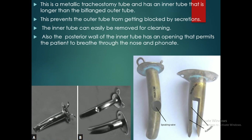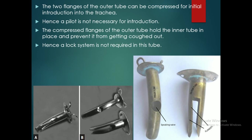It is a metallic tracheostomy tube and has an inner tube that is longer than the bi-flanged abductor tube. This prevents the abductor tube from getting blocked by secretions. The inner tube can easily be removed for cleaning. The posterior wall of the inner tube has an opening that permits the patient to breathe through the nose and enables phonation. The two flanks of the outer tube can be compressed for initial introduction into the trachea, so a pilot is not necessary. The compressed flanks of the outer tube hold the inner tube in place and prevent it from being coughed out, so a lock system is not required.